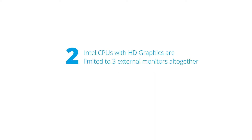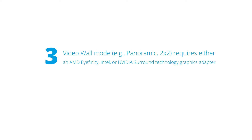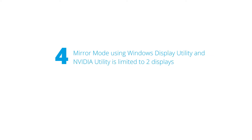2. Intel CPUs with HD graphics are limited to 3 external monitors altogether. 3. Video wall mode requires either an AMD iFinity, Intel, or NVIDIA Surround Technology graphics adapter. 4. Mirror mode using Windows Display Utility and NVIDIA Utility is limited to 2 displays.